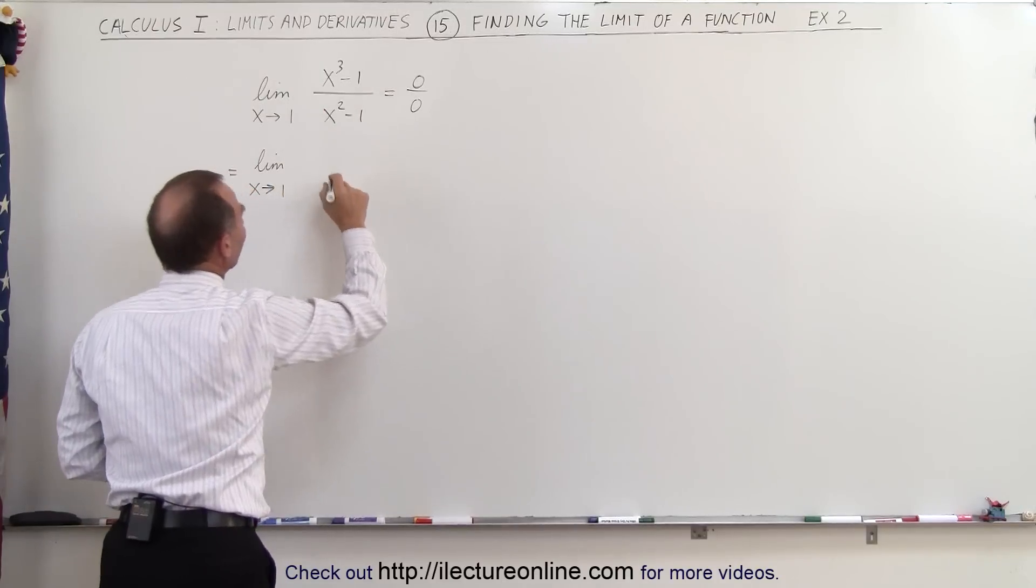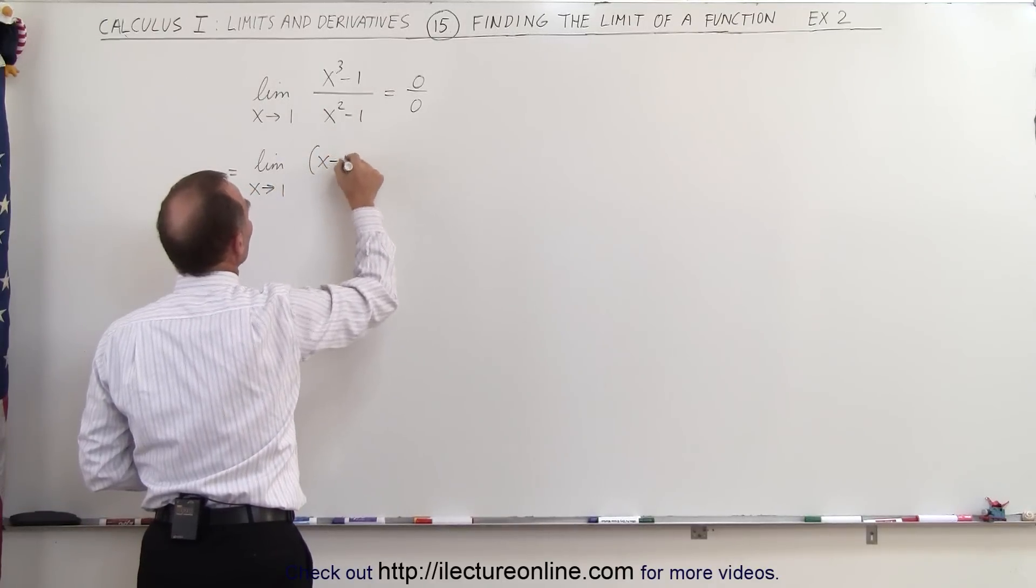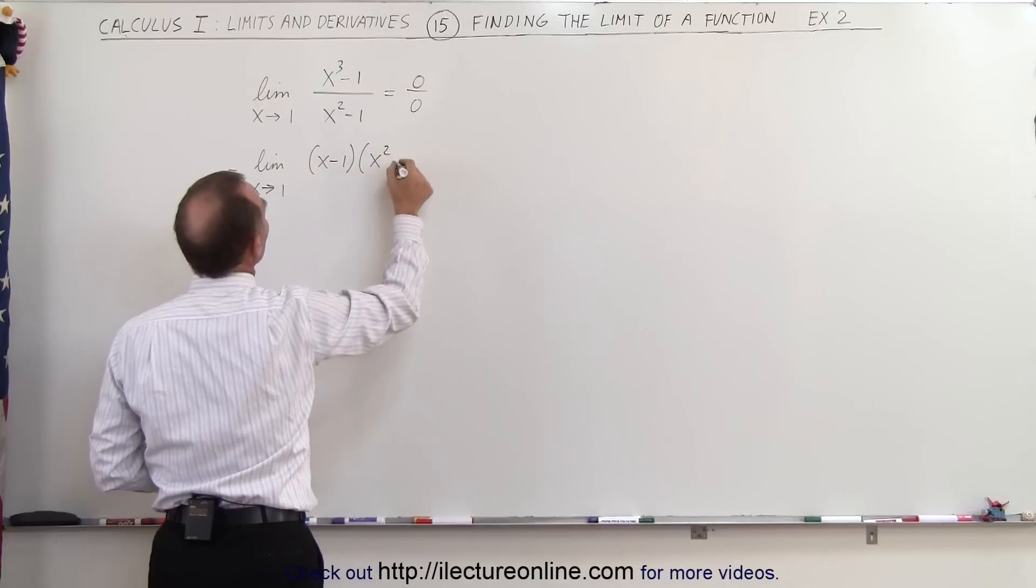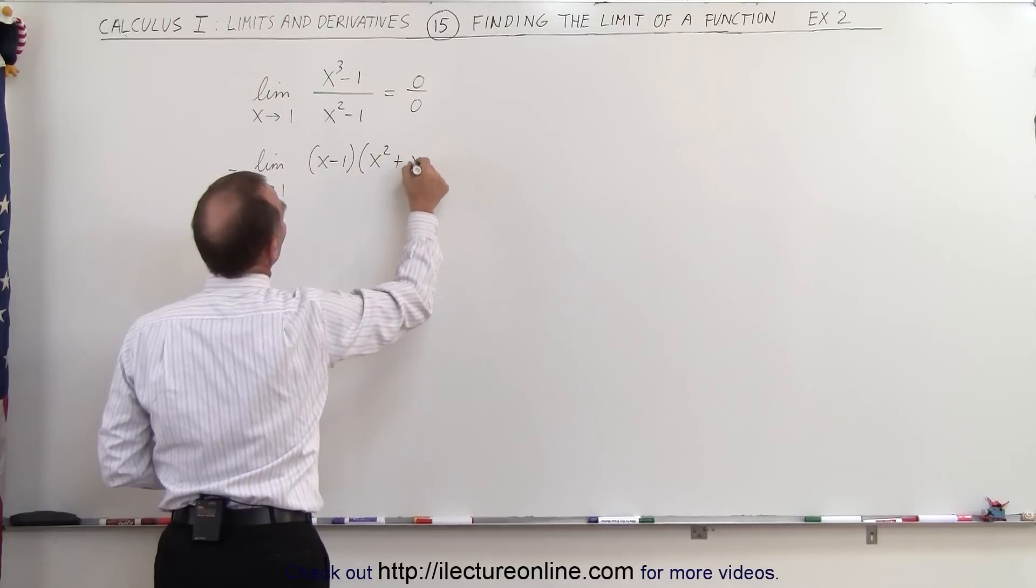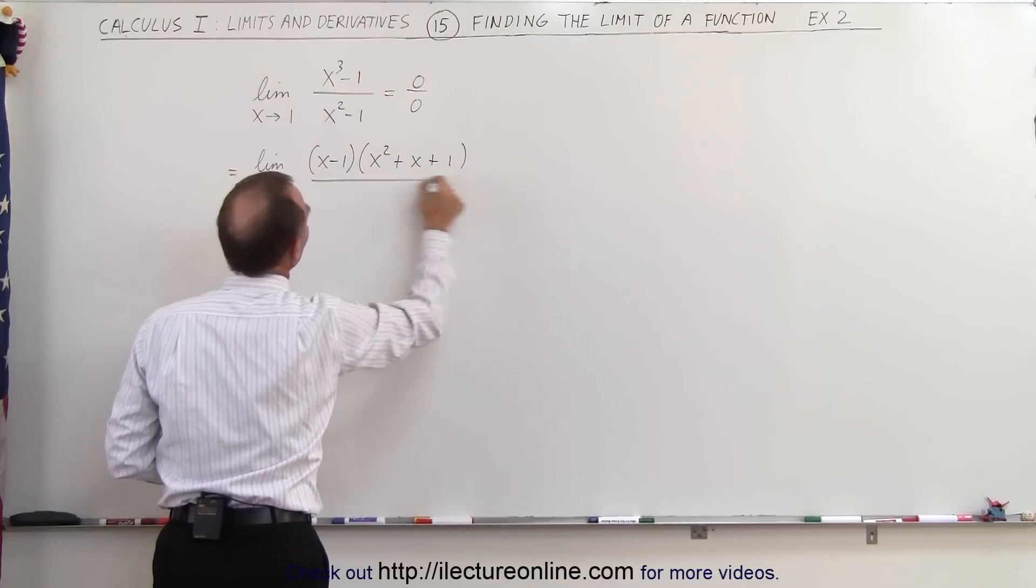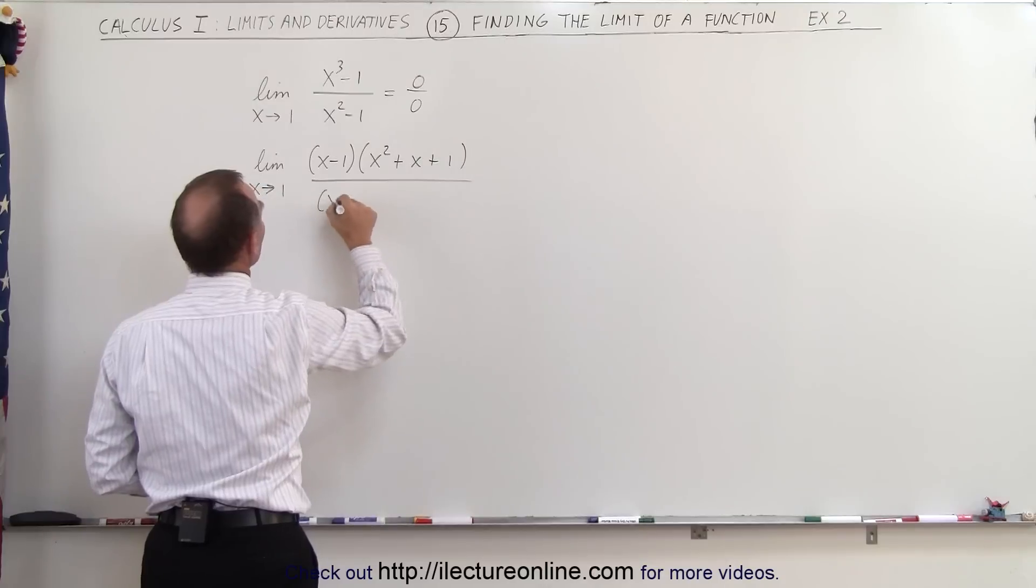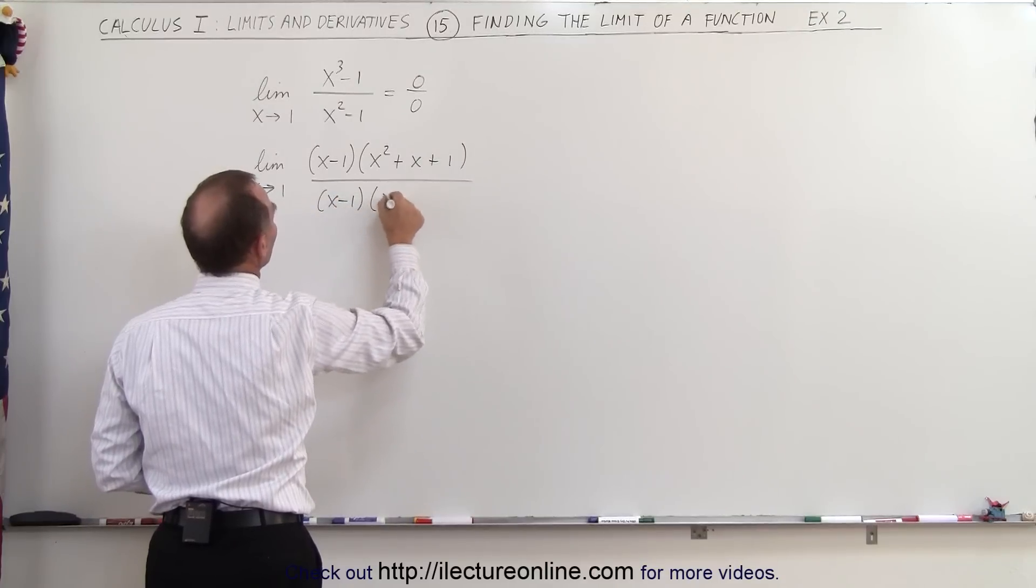The numerator can be factored into x minus 1 times x squared plus x plus 1. The denominator can be factored as x minus 1 times x plus 1.